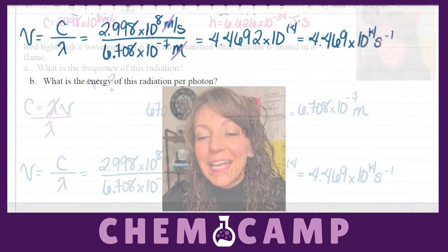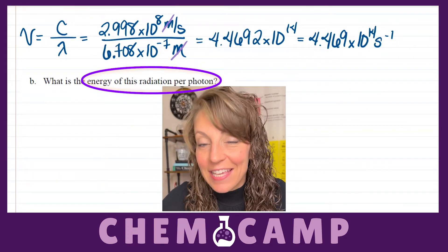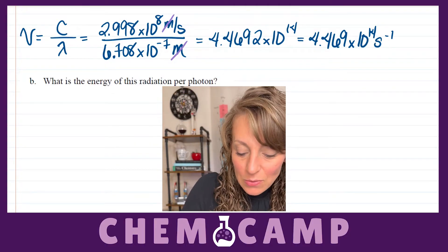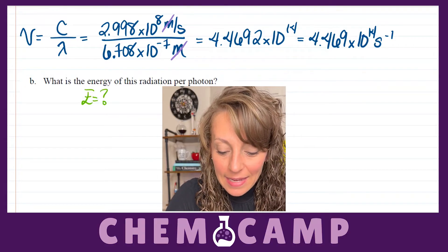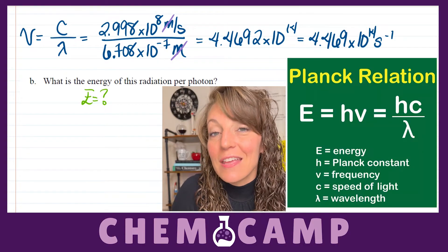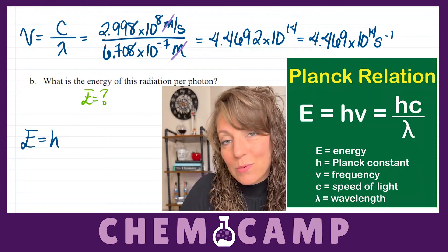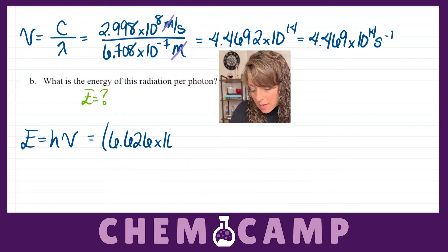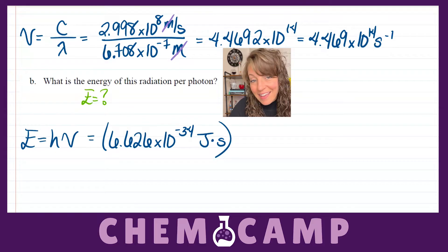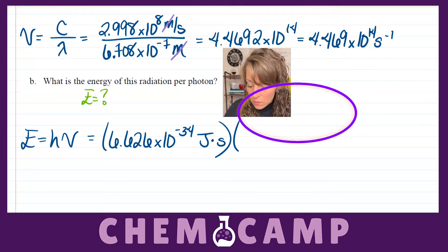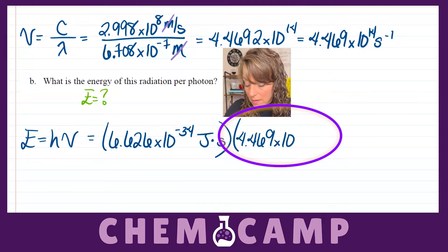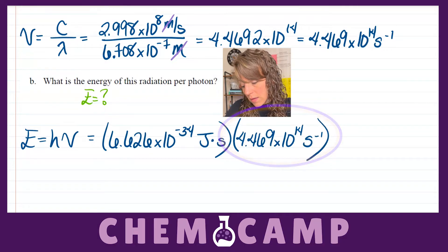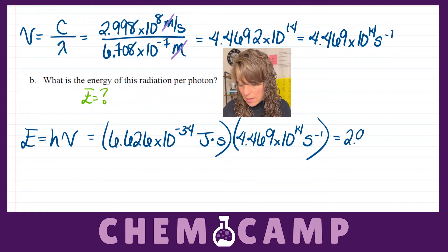In Part B, they want us to determine the energy associated with this radiation per photon. Since they want energy, I'll use the equation involving energy: E equals Planck's constant times frequency. So I plug in 6.626 times 10 to the negative 34 joules per second and multiply by the frequency solved in Part A — 4.469 times 10 to the 14th seconds to the negative 1 — which gives an answer of 2.9611 times 10 to the negative 19.